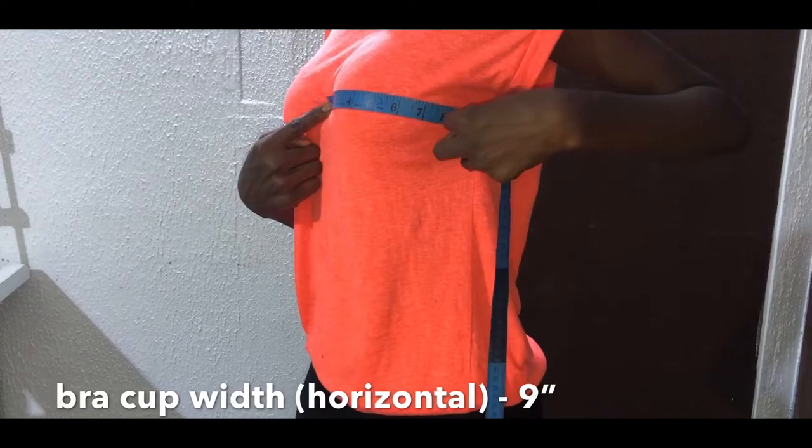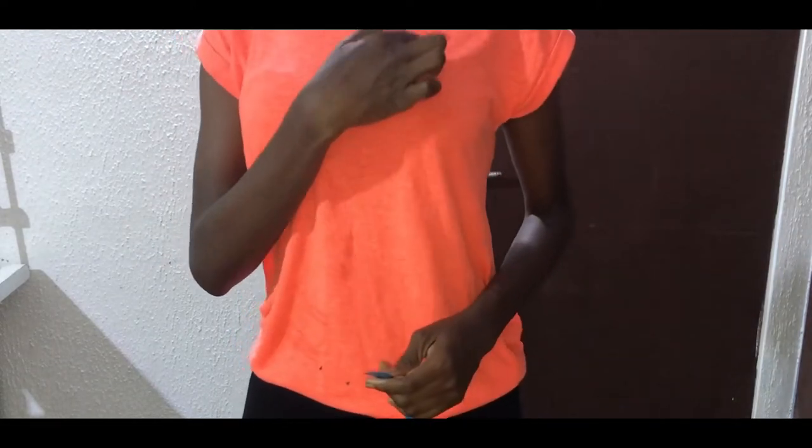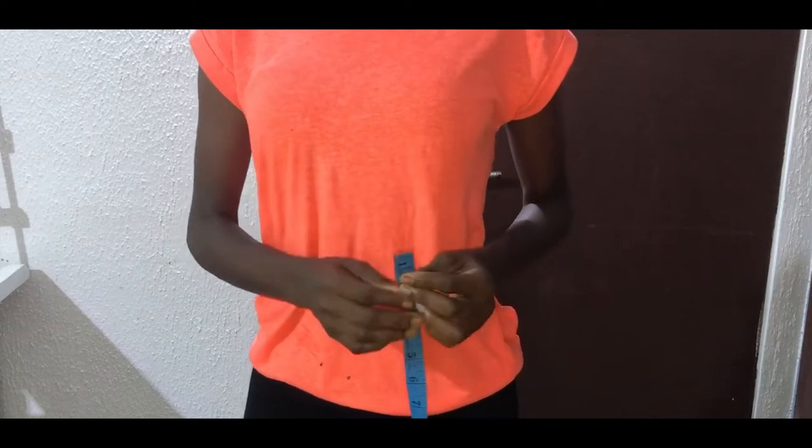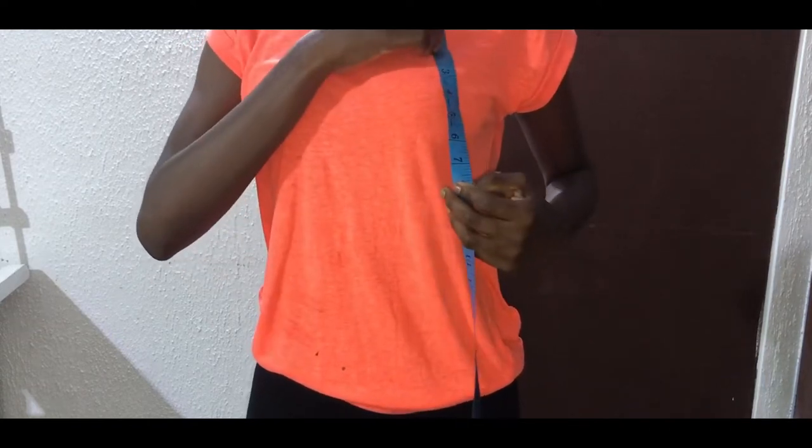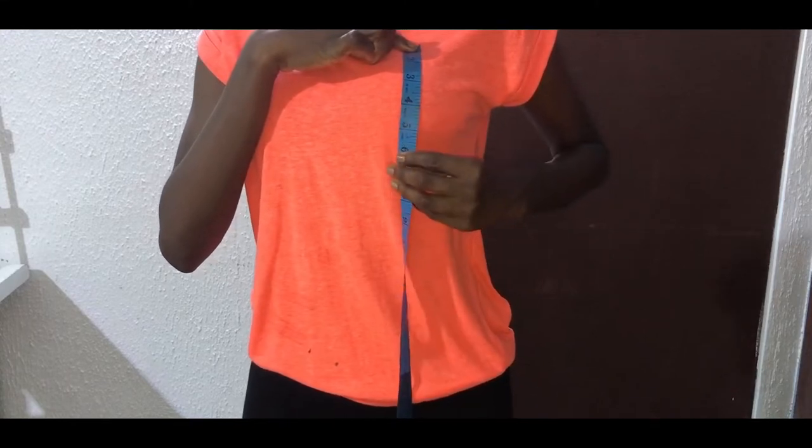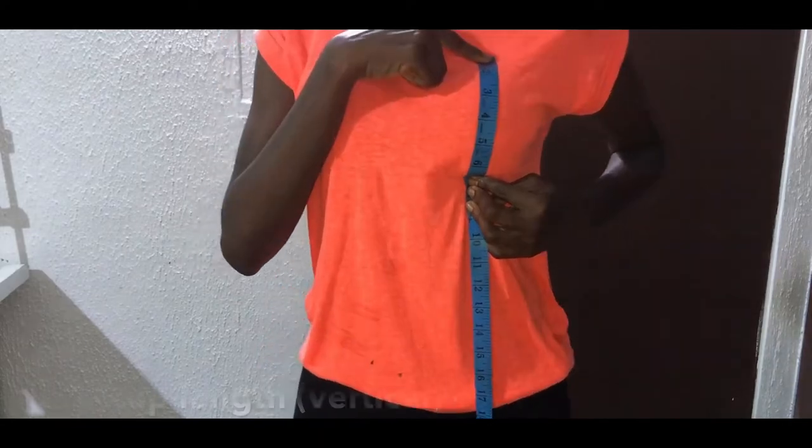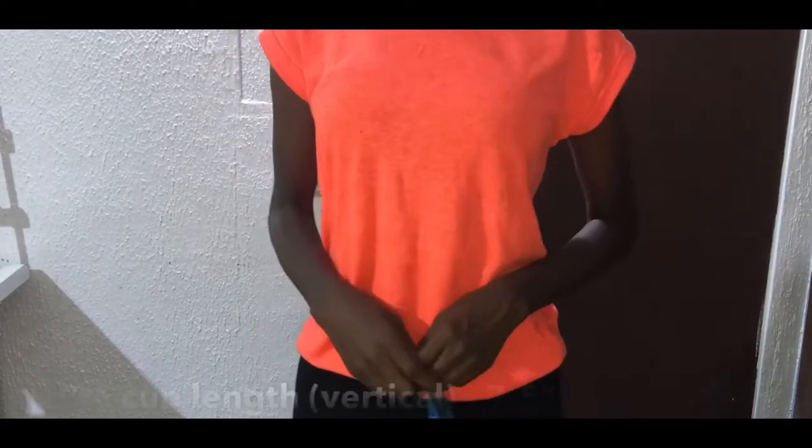The next measurement is the vertical measurement, which is the length of the bra cup. This measurement is taken by placing the tape at the upper part of the bust, moving down to the nipple point and ends at the under bust. So I have 7.5 inches. So let's get started. I have the pattern paper folded into two.